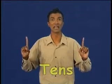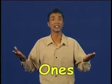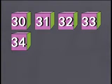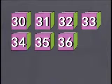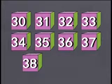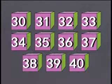Just now we counted in tens. Now let's count numbers in ones. Since there are so many numbers from 0 to 100, we will just count numbers in ones from 30 to 40 as an example. Let's start counting. The first number is 30. What comes after 30? Yes — 31. Then 32, 33, 34, 35, 36, 37, 38, 39, and 40. Very good.